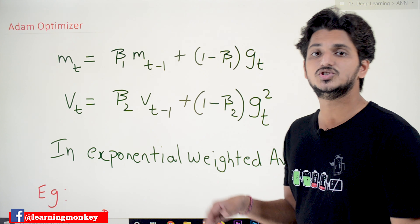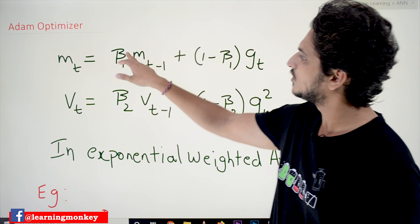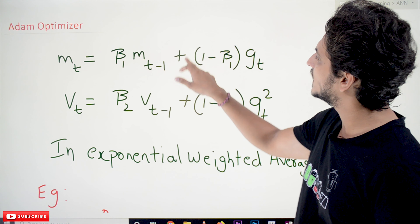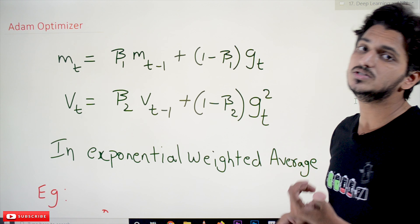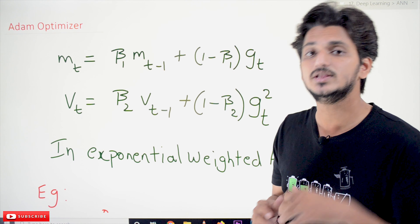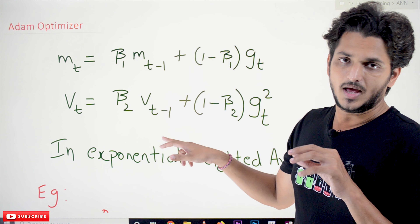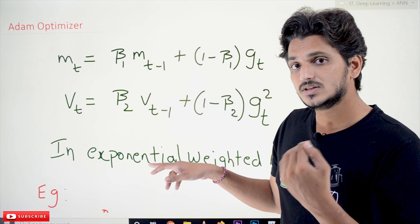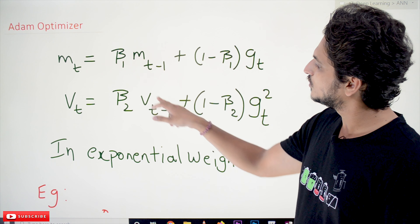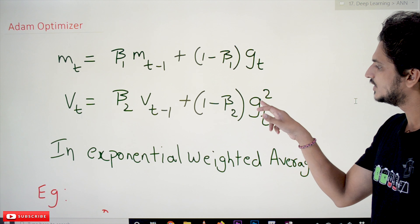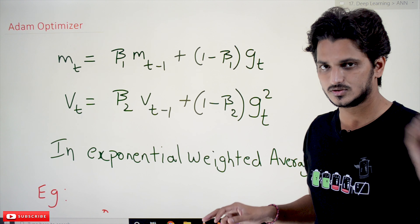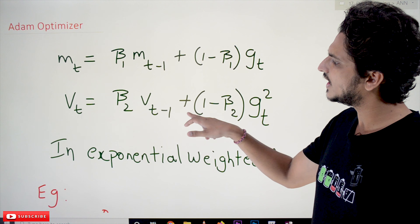The equation used in SGD with Momentum is: MT = Beta1 * MT-1 + (1 - Beta1) * GT, where GT means the differentiation value. We use Beta1 here because we will have different Betas. This is the momentum term used in Stochastic Gradient Descent with Momentum. We also used the Exponential Weighted Average of previous gradient squares in AdaGrad and AdaDelta: VT = Beta2 * VT-1 + (1 - Beta2) * GT². This gradient square value was used in AdaDelta.